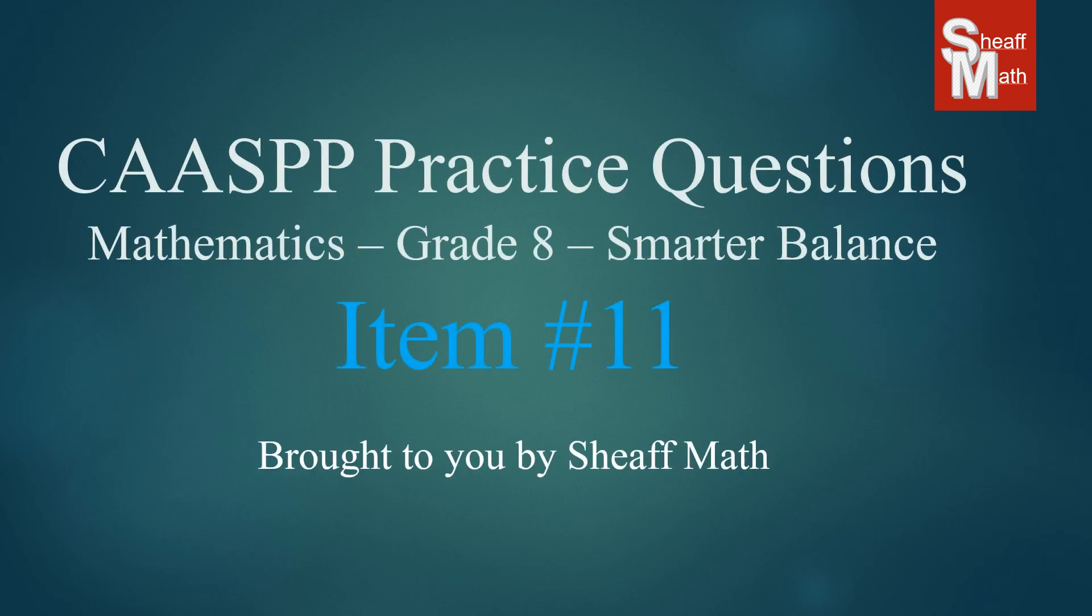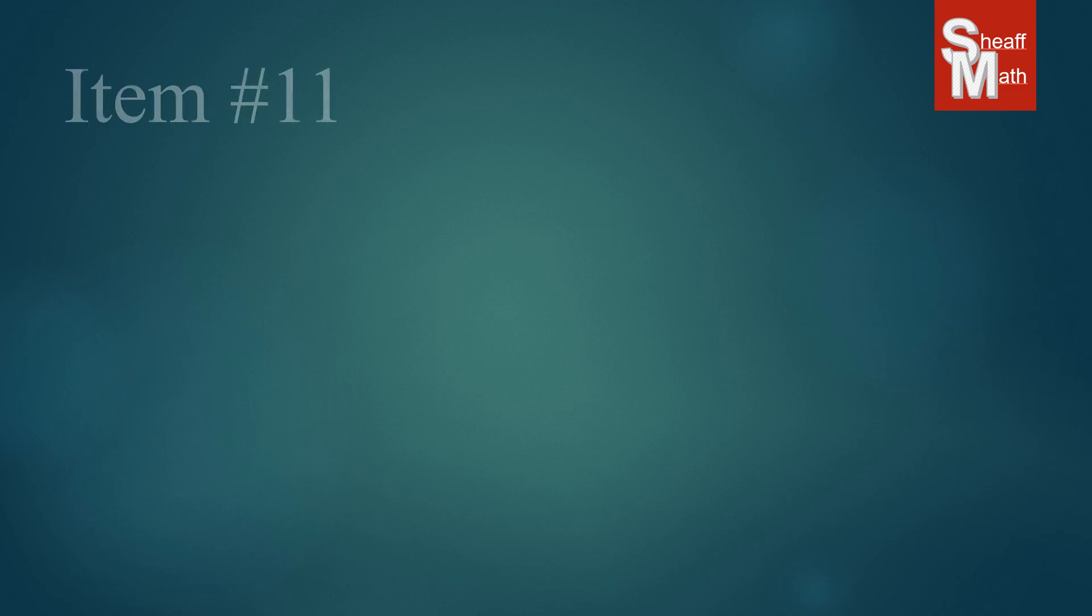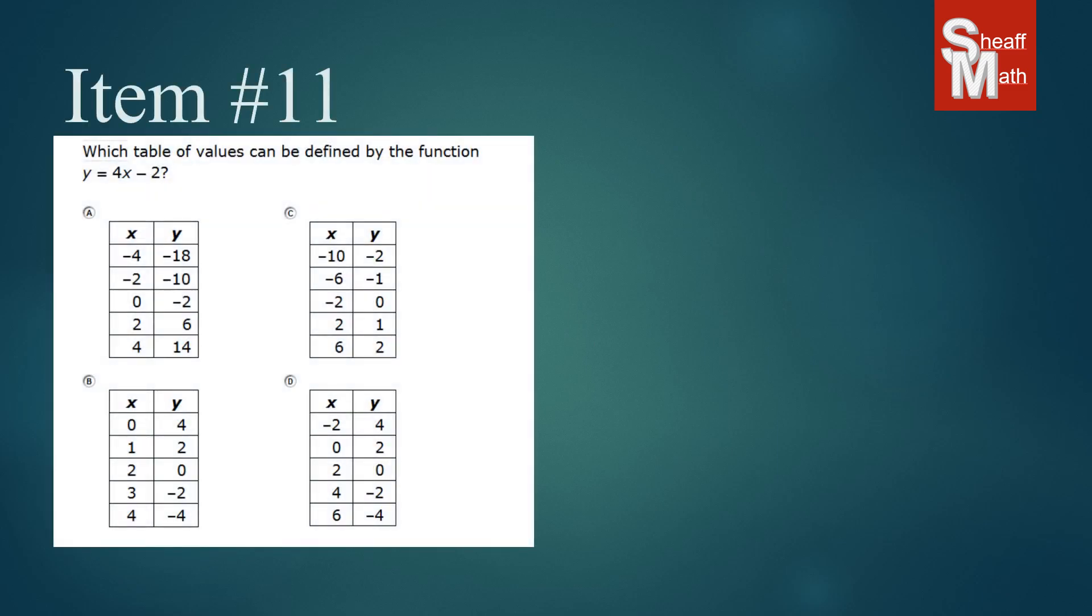Caspi practice test, item number 11. In this item, we have four x,y tables and a function y equals 4x minus 2. We want to find out which table is defined by these values.